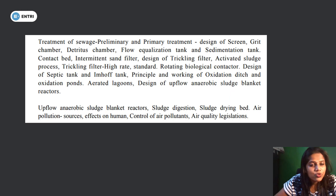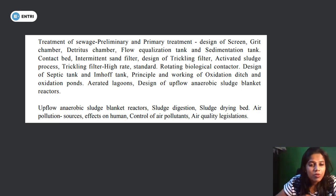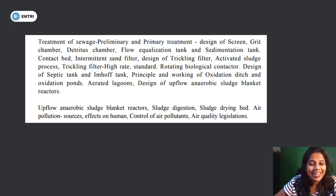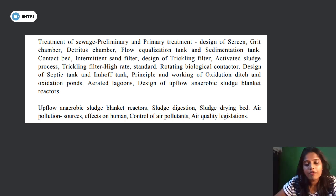Sewage treatment — preliminary and primary treatment: screen, grit chamber, flow equalization tank, sedimentation tank, contact bed, intermittent sand filter, trickling filter, activated sludge process, high rate trickling filter, rotating biological contactor, design of septic tank, Imhoff tank, oxidation ditch, oxidation pond, aerated lagoons, anaerobic sludge blanket reactors — upflow — sludge digestion, sludge drying bed. Also air pollution: sources, effects, control of air pollutants, and air quality legislation.